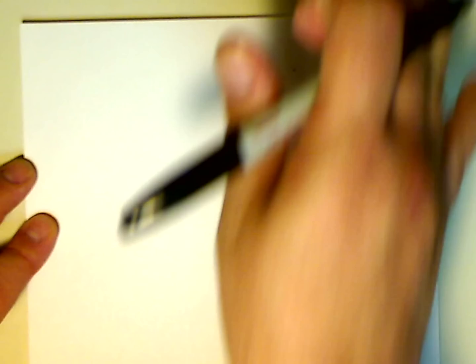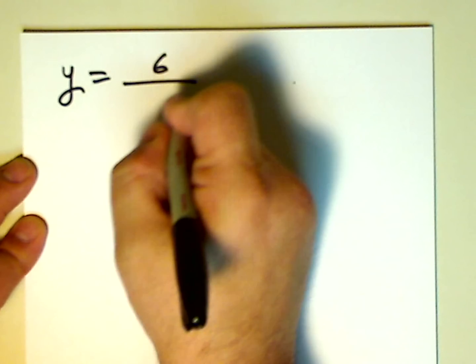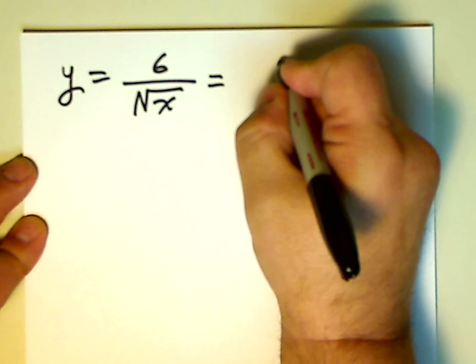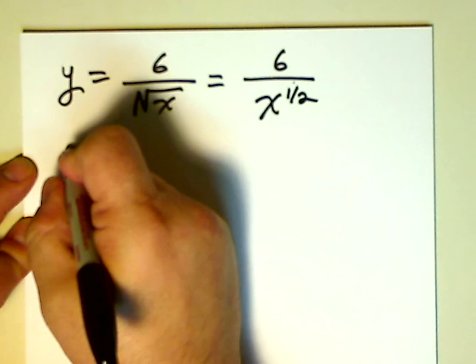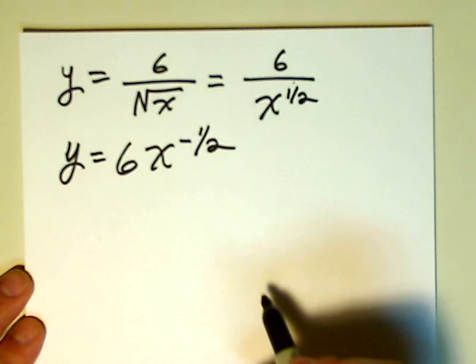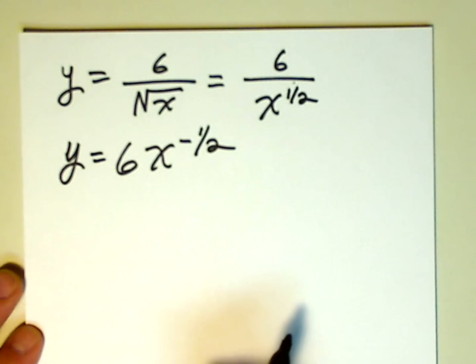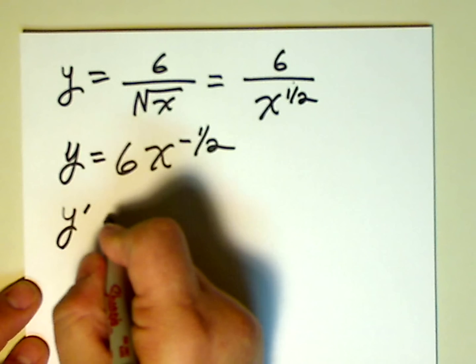Let's look at one or two more on this video, and then we'll work a few more problems on a second video. How about y is equal to 6 over the square root of x. Well, that can be rewritten as 6 over x to the 1 half, and that can be rewritten as 6x to the negative 1 half. All right, we can use the negative exponent on the 1 half, and we've got it all on one line. We can use the power rule. All is right with the world.